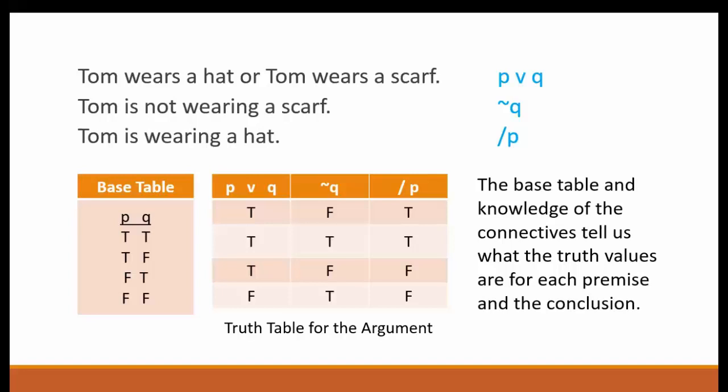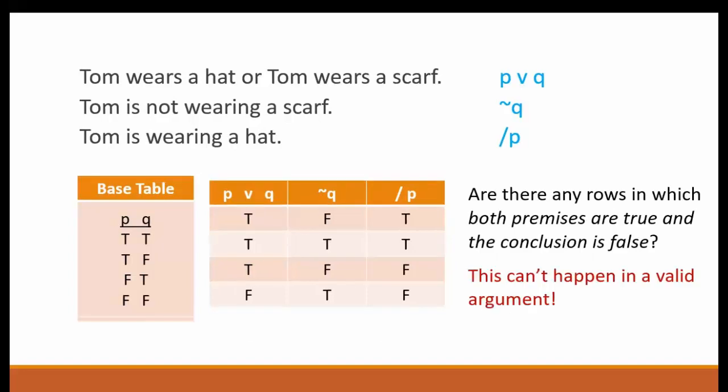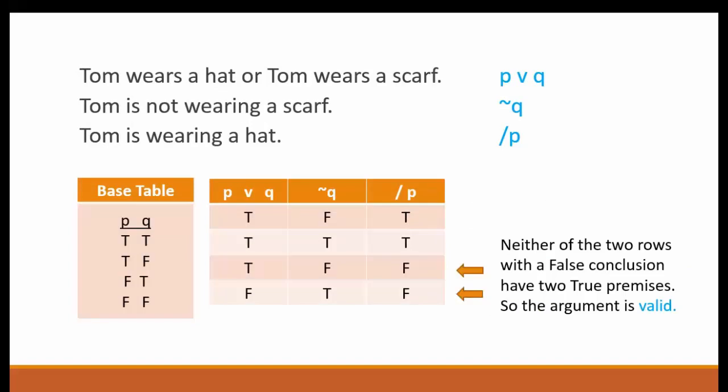Now we have the truth table completed for this argument. But what does it tell us about the validity of this argument? We need to look for rows in which all the premises are true and there is a false conclusion — that can't happen in a valid argument. So if it does, we know the argument is invalid. There are only two rows in which the conclusion is false: rows 3 and 4. In row 3, the first premise is true but the second premise is false. Since there are no rows in the truth table for this argument in which all premises are true and the conclusion is false, the argument has been proven valid.